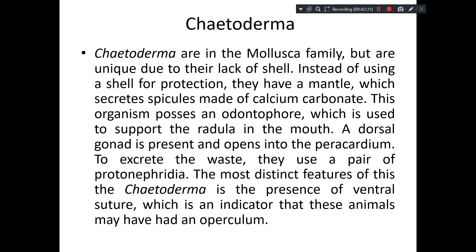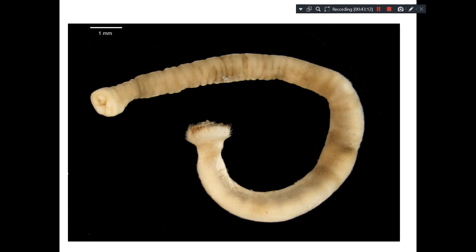The gonads are dorsal and they open into the pericardium. The excretory system is not developed, so to excrete waste they use a pair of protonephridia. Another unique feature of Chaetoderma is the presence of a ventral suture, which indicates that probably these organisms had an operculum — a gill cover. This is how Chaetoderma appears.